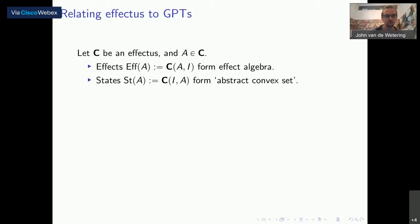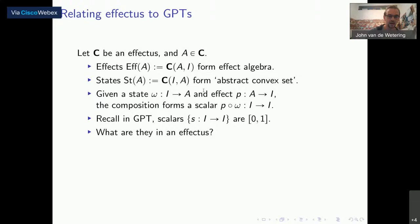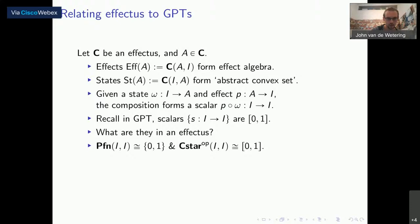Let's see how effectuses actually relate to GPTs. Effects form an effect algebra, which can be seen as a generalization of the convex structure — instead of a convex structure, we now have this partially additive structure. The states form something called an abstract convex set. As in a GPT, if we have a state and an effect, we can compose them and get a scalar — a map from the trivial object to the trivial object. In GPTs, scalars are elements of the unit interval. Now they're going to be something else. For partial functions, these are just the Booleans — which we'd expect from our model of deterministic computation, giving us two truth values, zero and one. While for quantum mechanics, we indeed get probabilities, which is also what we'd hope.